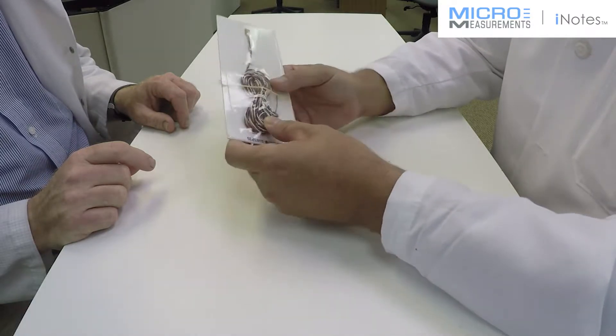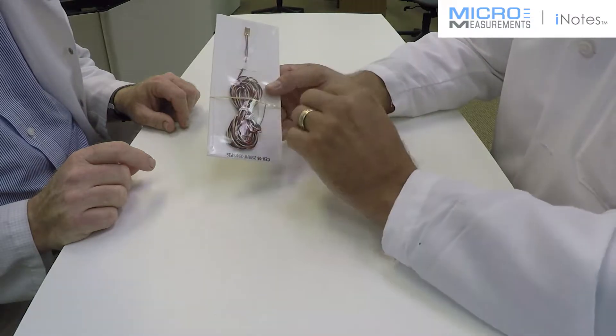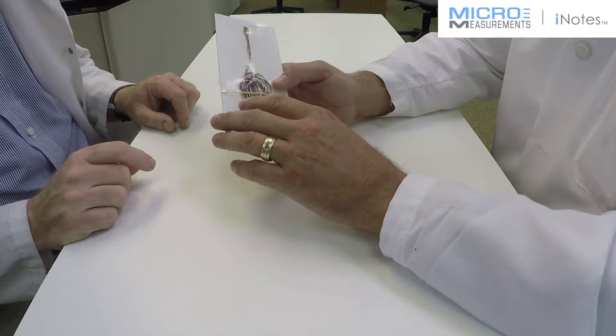Traditionally, these pre-attached gauges that had vinyl would be rated to about 180 Fahrenheit. Now, we're just about doubling that temperature range.